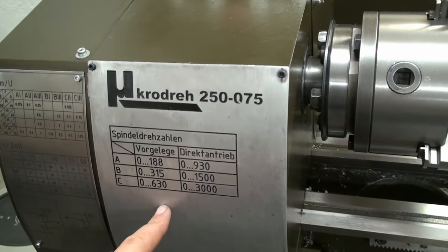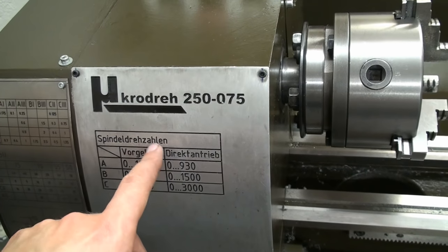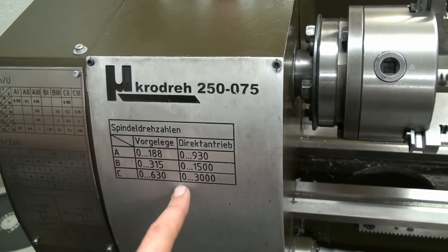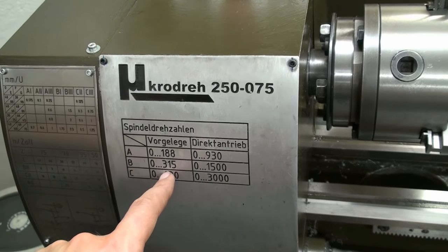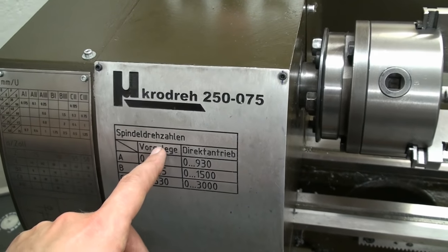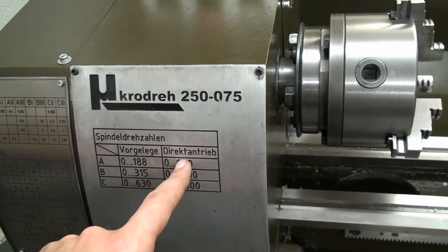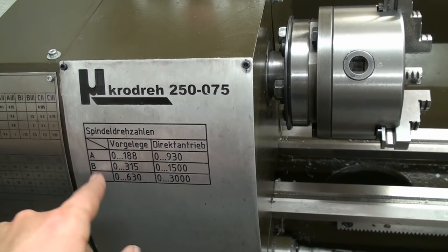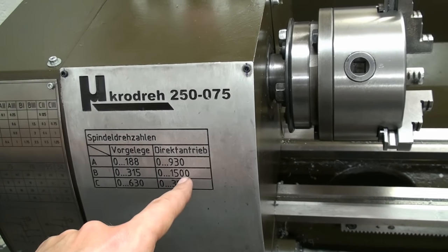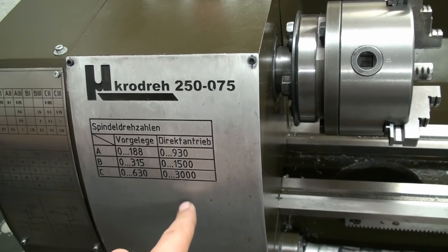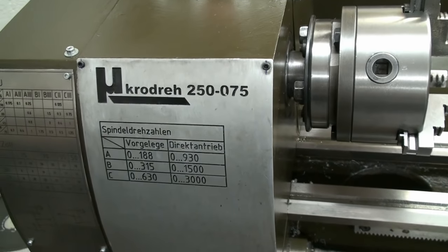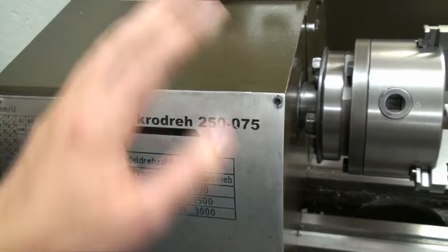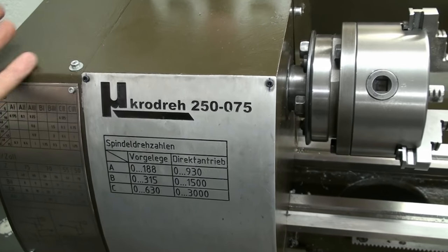There we have the chart with the spindle RPM. This is back gear, which I got rid. I made the sign before I decided to get rid of the back gear. So, this doesn't count, I have direct drive, and the lower range, 0 to 1000 RPM, medium range is 0 to 1500 RPM, and the highest setting is 0 to 3000 RPM. Most of the time I have it set at 0 to 930. That gives me a full range of speeds I need for most of my operations.